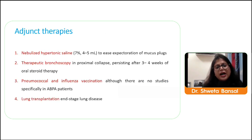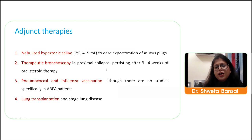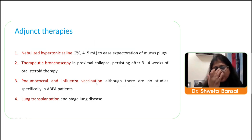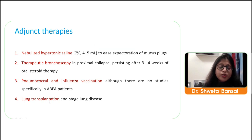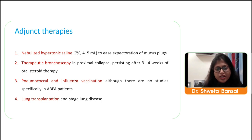Adjunct therapies include nebulized hypertonic saline for expectoration of mucus; therapeutic bronchoscopy has limited role but may be used if collapse persists after steroid therapy. Pneumococcal and influenza vaccines are recommended as in other chronic lung diseases. Lung transplant may be offered to patients who have progressed to Stage 6 with bronchiectasis and cor pulmonale as a last resort.